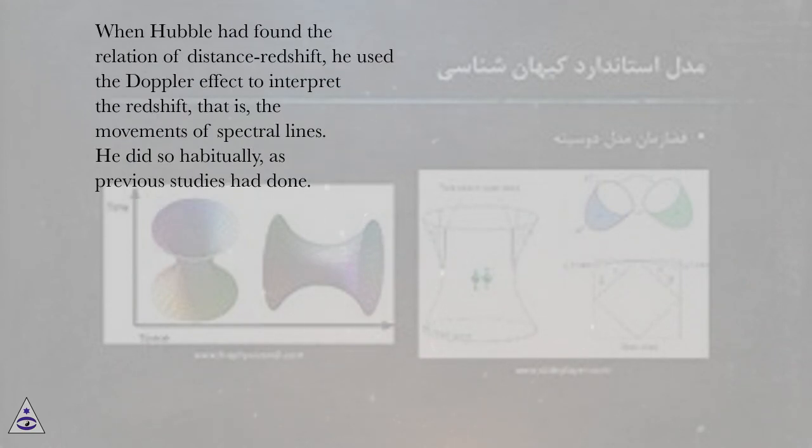When Hubble had found the relation of distance redshift, he used the Doppler effect to interpret the redshift, that is, the movements of spectral lines. He did so habitually, as previous studies had done.